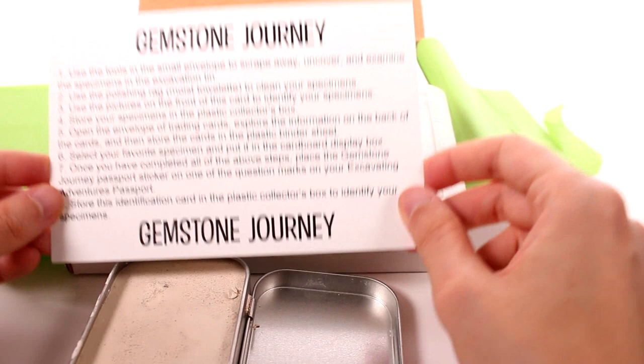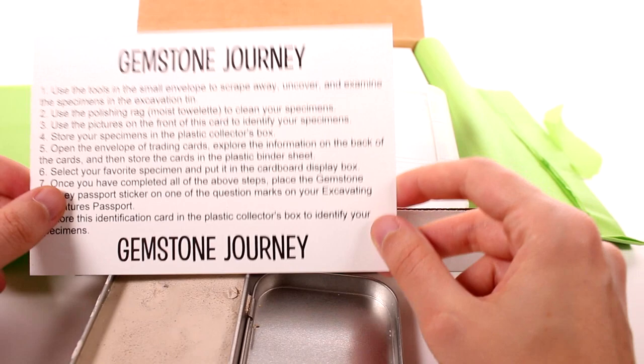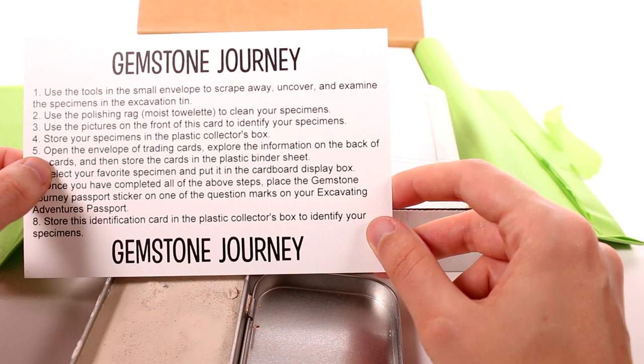It says use the tools in the small envelope to scrape away, uncover, and examine the specimens in the excavation tin. Use the polishing rag and moist towelette to clean your specimens. Use the pictures on the front of this card to identify your specimens.